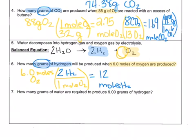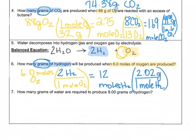Now I want to get to grams of hydrogen, so I use the ratio that 1 mole of any material equals its molar mass, which is 2.02 grams for H₂. So I get 24.24 grams of hydrogen.